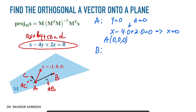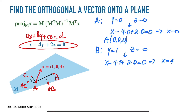In order to find the coordinates of the second point B, I'm going to set Y equal to 1 and Z equal to 0, and substitute this into the equation of the plane again. It's going to be X minus 4 times 1 plus T times 0 equals 0, which leads to X equals 4. So the point B is going to have the coordinates: X equals 4, Y equals 1, and Z equals 0.